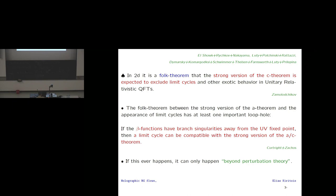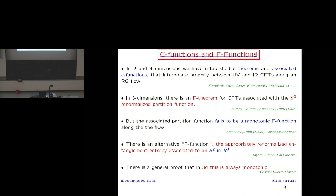The answer to this question is also correlated with the potential symmetry of scale invariant theories — whether they are always conformally invariant or not. In two dimensions, the answer is yes; however in four dimensions, despite many attempts, there are loopholes. In two dimensions there is a folk theorem: if the strong version of the C theorem is correct, then this excludes limit cycles. However, this folk theorem has an important loophole — if beta functions can have branch cuts, one could have both a strong C theorem and still potentially have limit cycles, but only beyond perturbation theory.